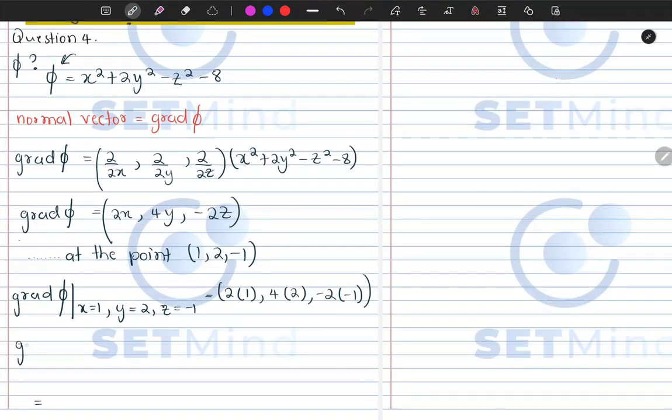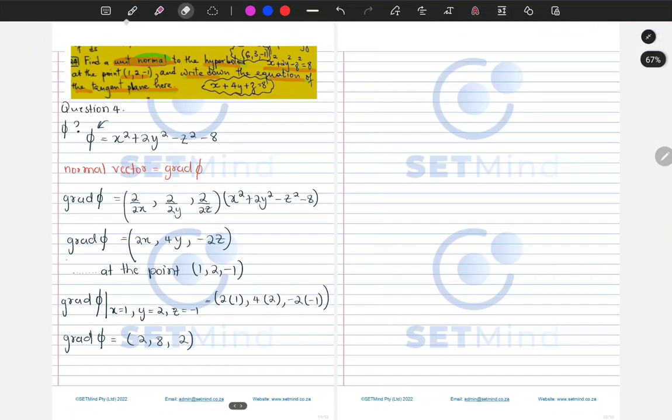So you will see that our gradient at the point which we are given will simply be (2, 8, 2). So that is what we have. So we need to first find the unit normal.